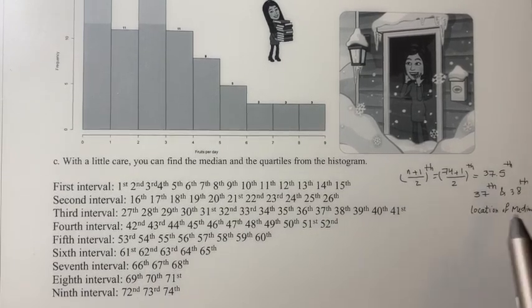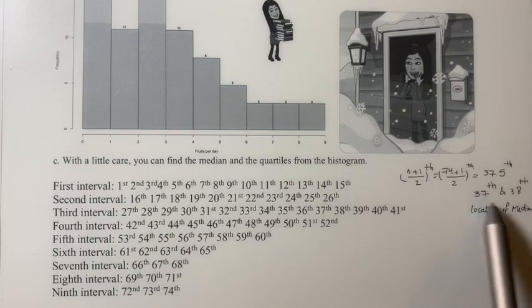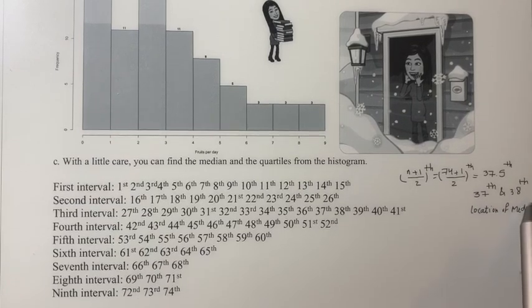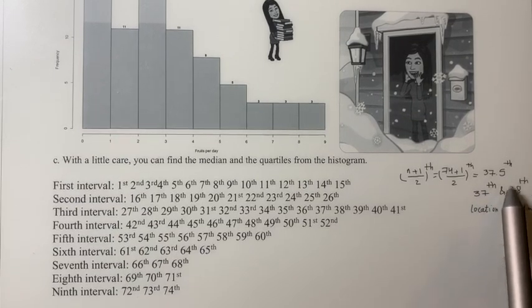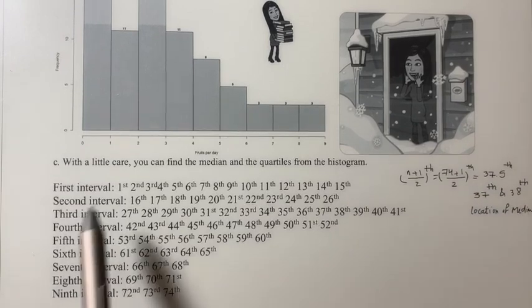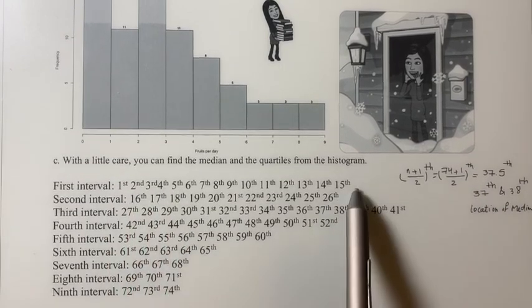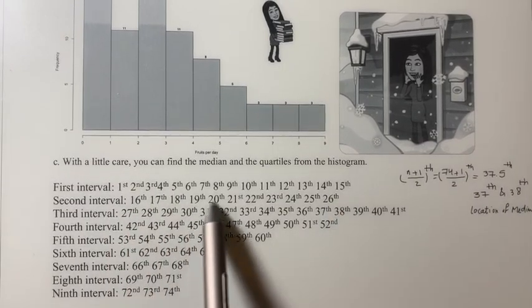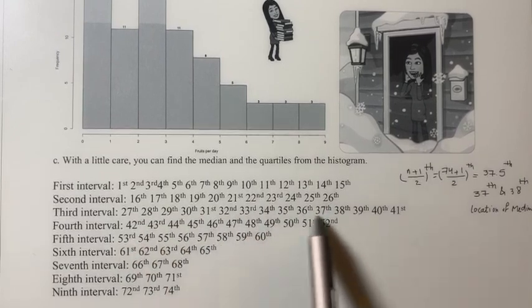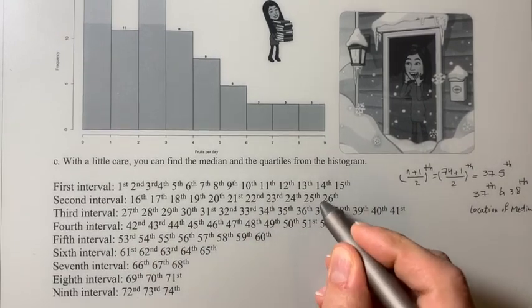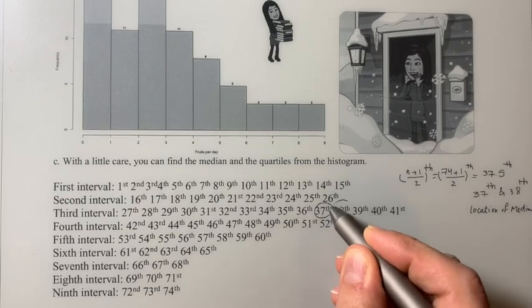Okay, so now I was looking for observation number 37 and observation number 38 to find the median, which is between these two. So look, 15 individuals here, 16, 17, 18, up to observation number 37 and 38.